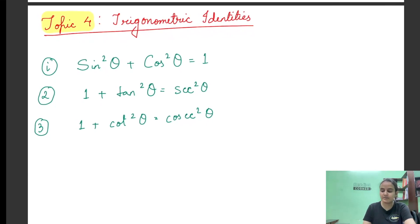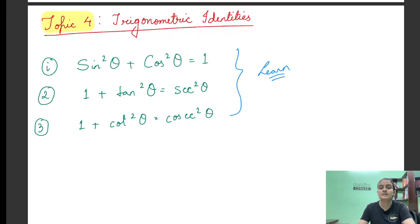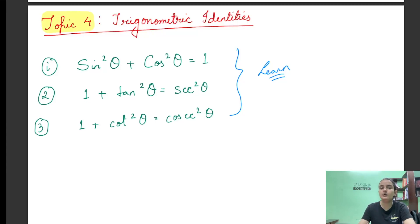तो यह तीनों identities are very very important, इन्हें हमें याद करना होगा। But since हम कुछ भी चीज़ें ऐसे याद नहीं करते, तो हमें इसके पीछे का — actually यह कहां से आया — वो भी समझना चाहिए। तो यह आपके syllabus में नहीं है, आपको कहीं proof करने नहीं बोला जाएगा, but it's better to know so that आपको easily पता रहे कि यह चीज़ें कहां से आईं, और इससे आपका basic भी और ज्यादा strong होगा।